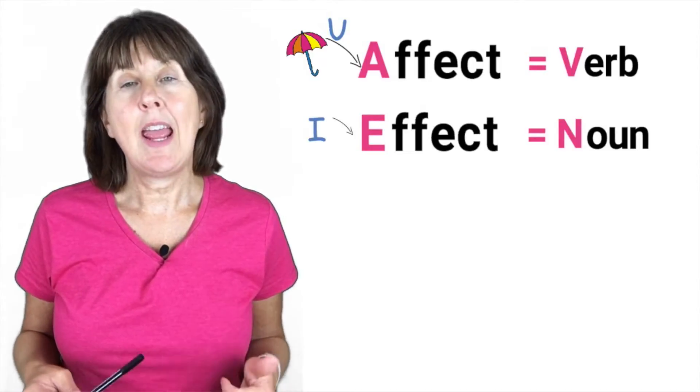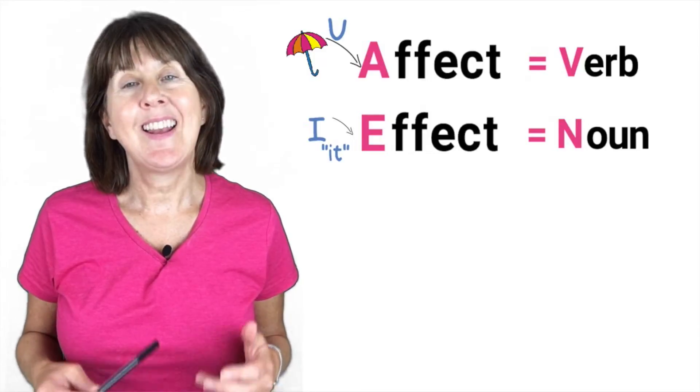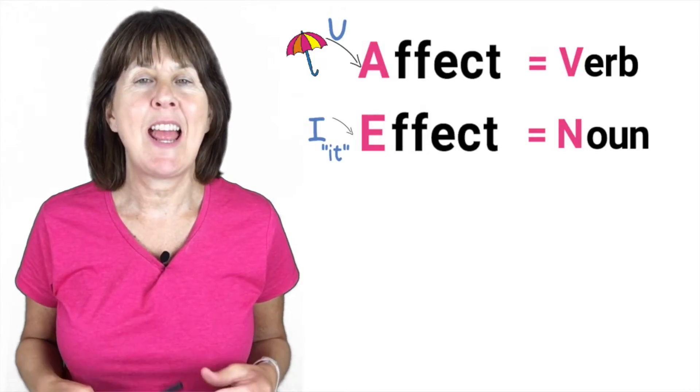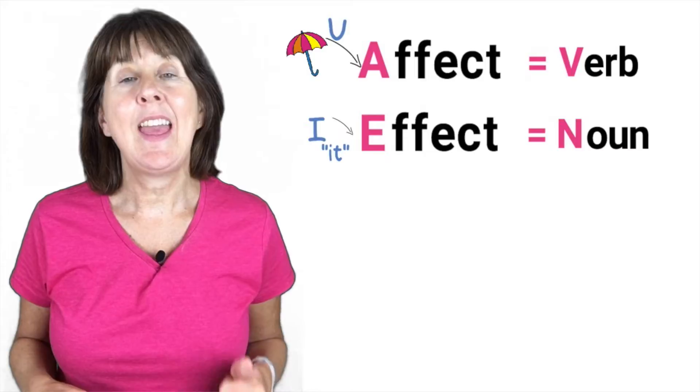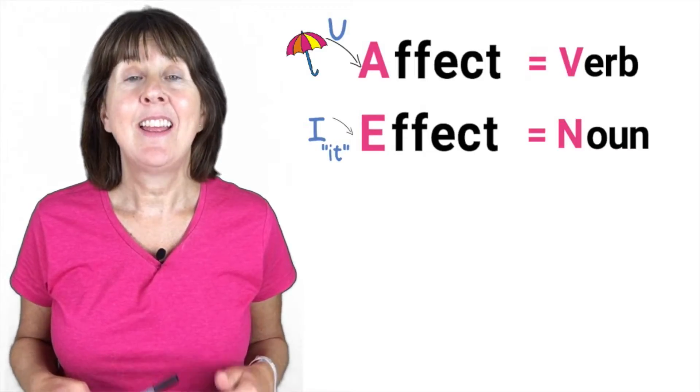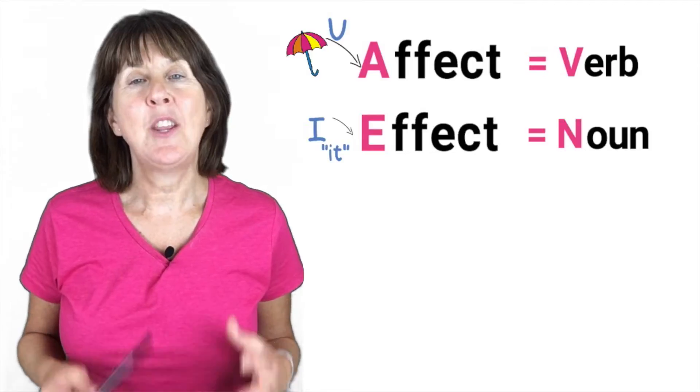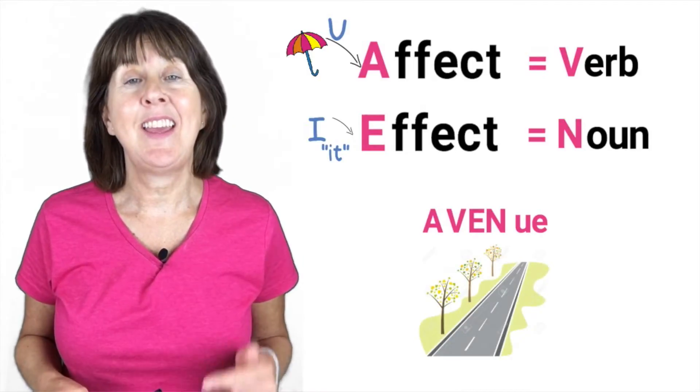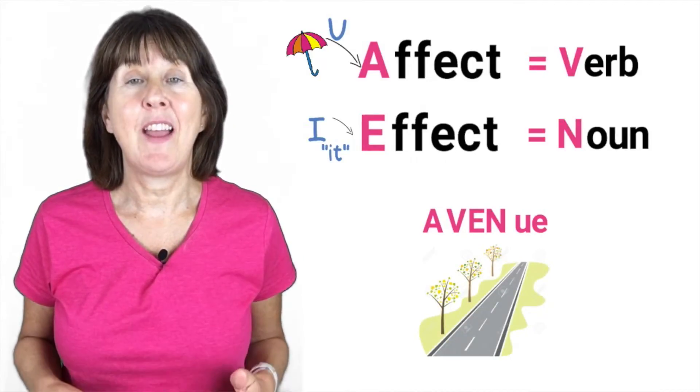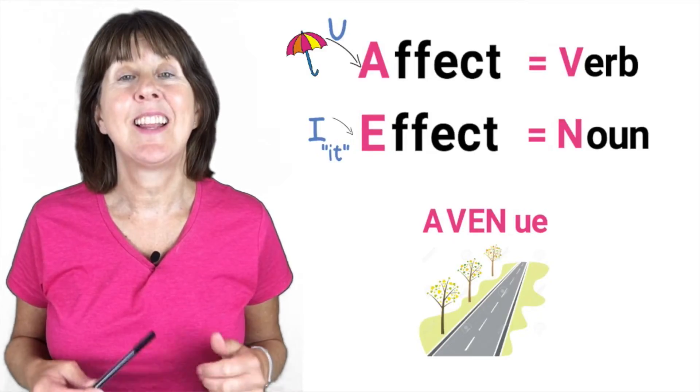So A for affect equals V for verb and E for effect equals N for noun. A-V-E-N. Think of an avenue, a long tree-lined avenue, and you will remember A-V-E-N: affect verb, effect noun.